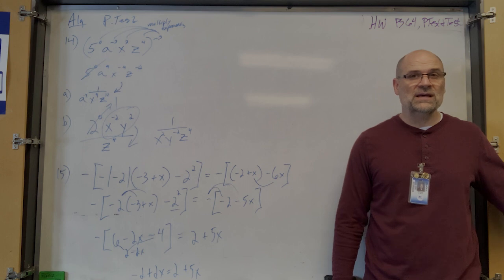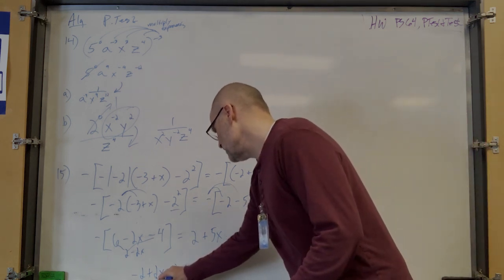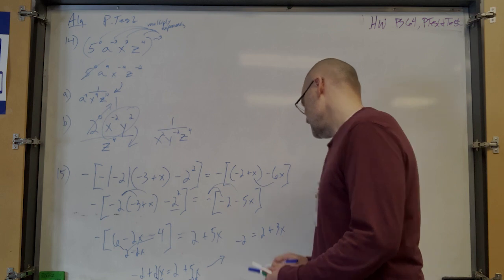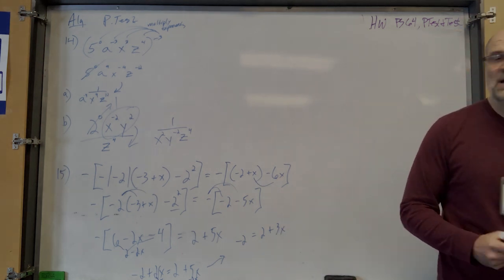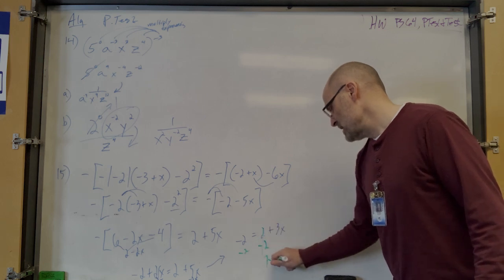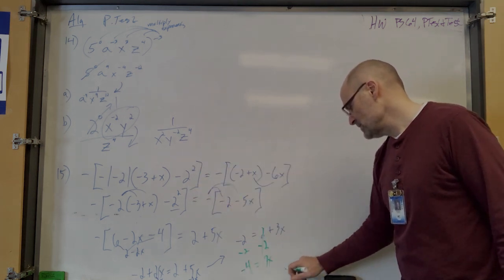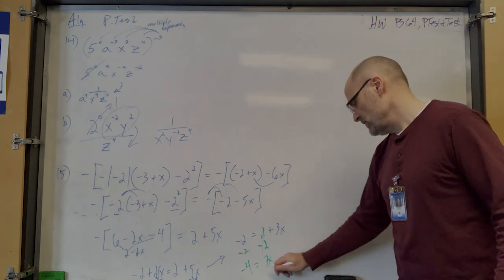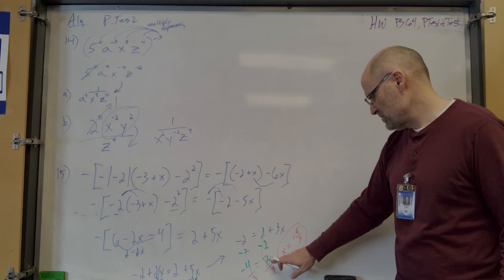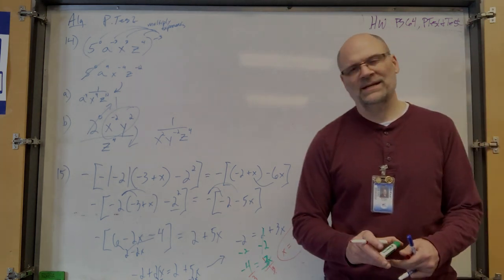Variables on both sides — get rid of the smaller variable term, 2x, by subtracting from both sides. That gives negative 2 equals 2 plus 3x. Subtract 2 from both sides: negative 4 equals 3x. Divide by 3: x equals negative four thirds.